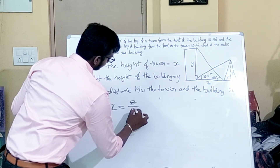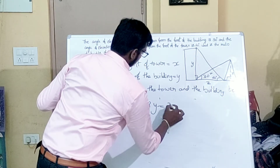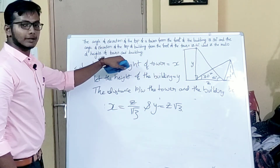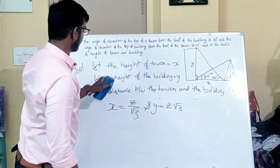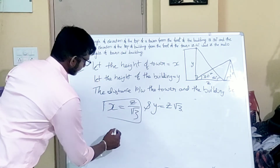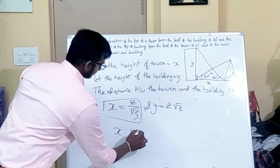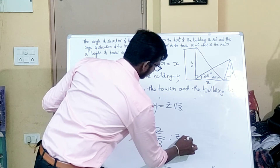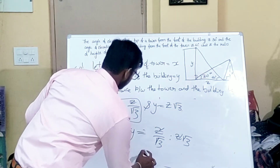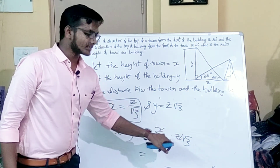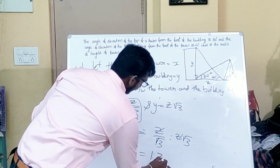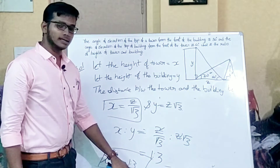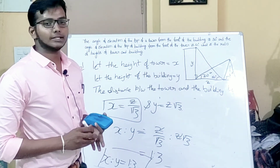Sending z to the other side gives y = z√3. So we have x = z/√3 and y = z√3. The question asks for the ratio of heights of tower to building, which is x : y = z/√3 : z√3. Cancelling z and simplifying by multiplying both sides by √3, we get 1 : 3. So the ratio of the heights of the tower and building is 1 : 3.